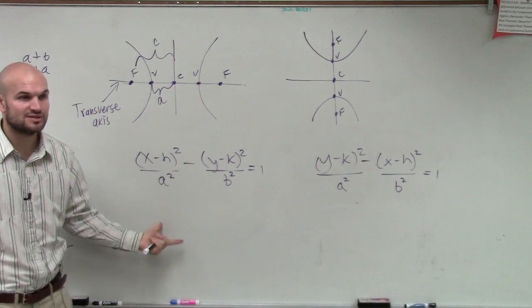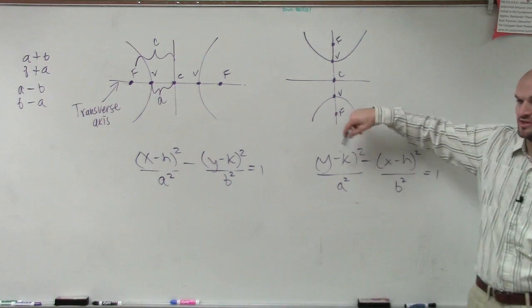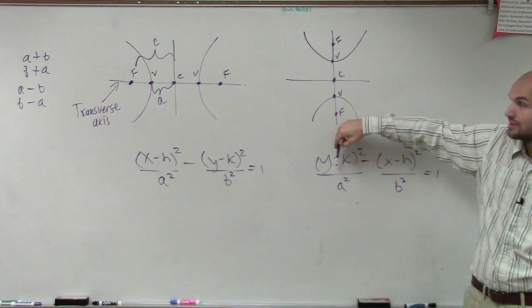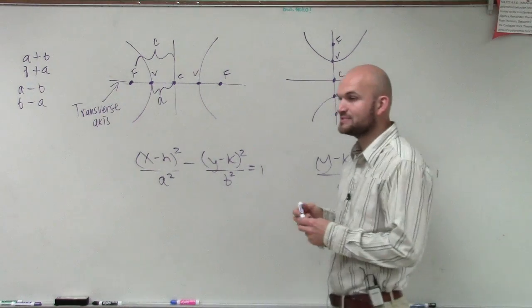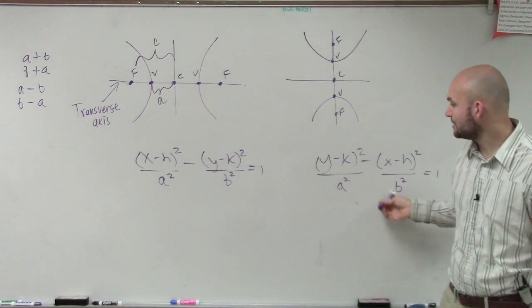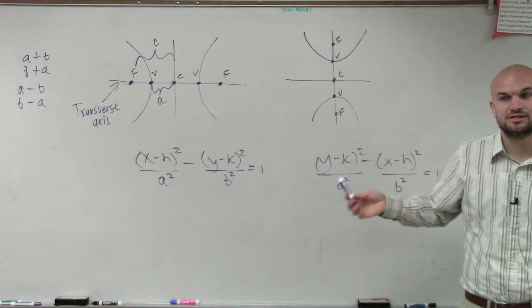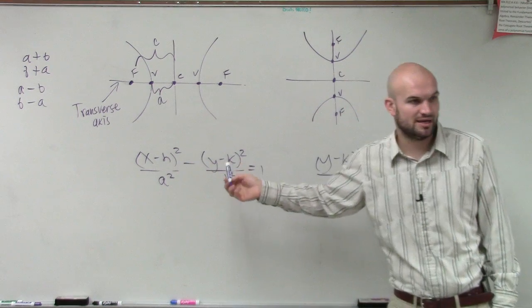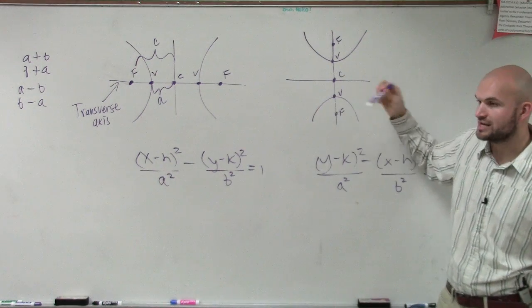Over here, you now notice what I did is I rewrote the X's and the Y's. So now, when my A is under my Y, it's going to be a vertical transverse axis. I just want you guys to understand, when ellipses, it was always the major axis was always your larger number A. Here, A and B, B can be larger than A. We just need to make sure whatever your A and your B are, you're always subtracting A minus the B. But we're not dealing with a major and a minor axis anymore. We're just dealing with one transverse axis.